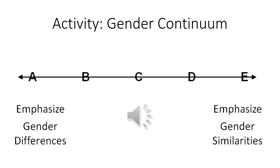Our goal is to try to stay in the middle and avoid either extreme. In class, we stand and place ourselves on this continuum and talk about why we are where we are in terms of emphasizing difference or similarity between men and women, whether we see differences as biological, socially constructed, or some of both. Even researchers tend to look for gender differences, and the media tends to exaggerate them.